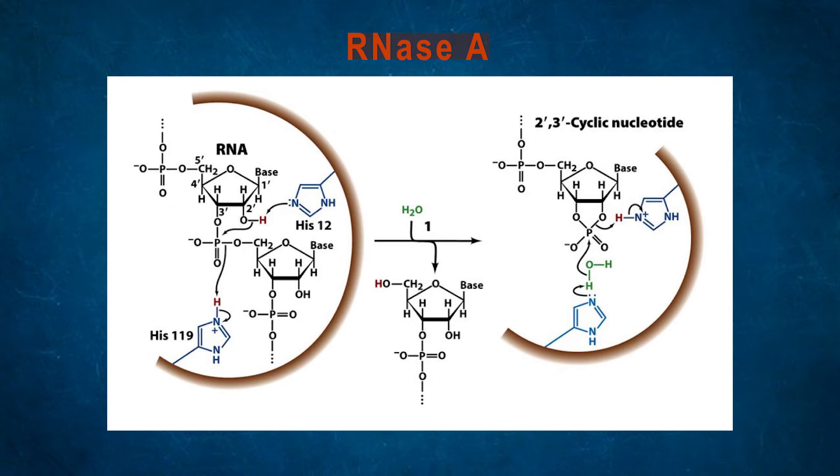First, one histidine acts by donating a lone pair as a base and by extracting H+, another histidine-119 acts as acid. Easily it can form 2',3'-cyclic nucleotide.